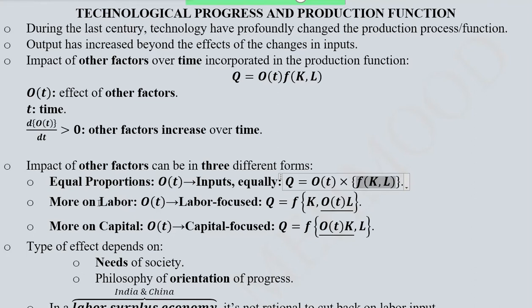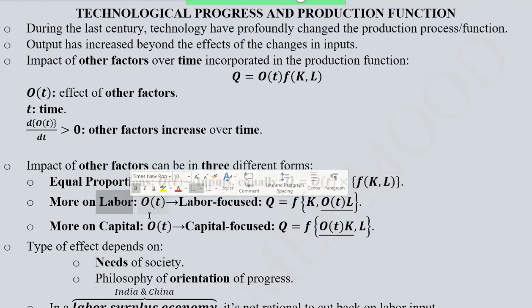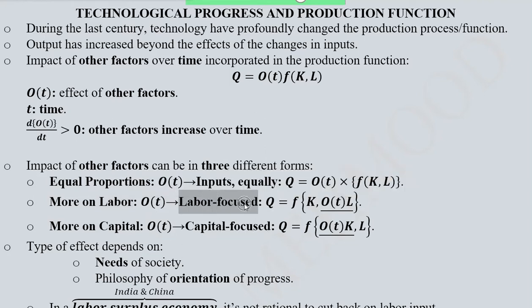If the labour is getting more of the effect, then it is a labour-focused change over time. This is why here we are writing capital as it is, but we are multiplying O(t) with labour, because it is showing its effect on labour.